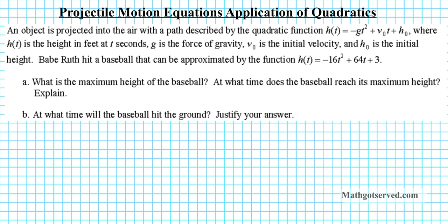Problem 1, we have the following situation: an object is projected into the air with a path described by the quadratic function h(t) equals negative gt squared plus v sub zero t plus h sub zero, where h(t) is the height in feet at t seconds, g is the force of gravity, v sub zero is the initial velocity and h sub zero is the initial height. We have a baseball that can be approximated by the function h(t) equals negative 16t squared plus 64t plus 3.